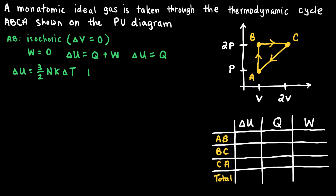We compare the final and initial temperatures using the ideal gas law, PV = NkT. So at any moment on the thermodynamic cycle, the temperature is given by the product of pressure and volume divided by Nk, which for this kind of problem is a constant. The changes in pressure and volume affect the temperature, and different locations on the PV diagram correspond to different temperatures.